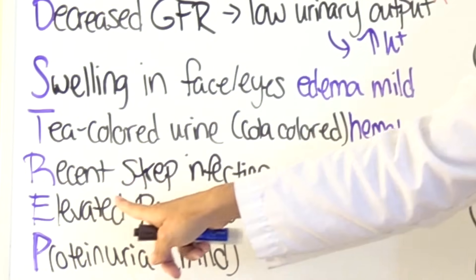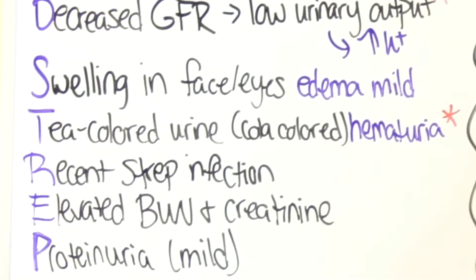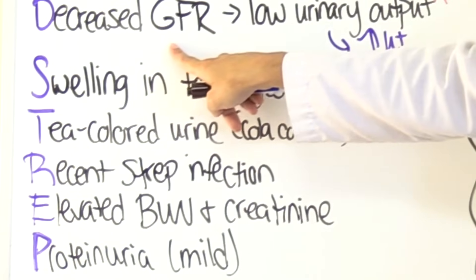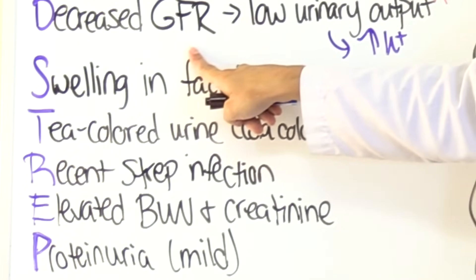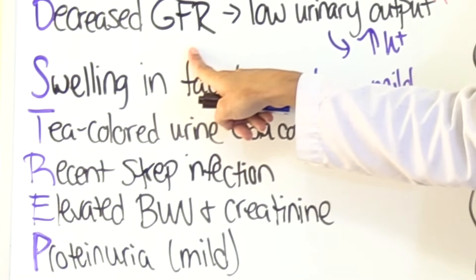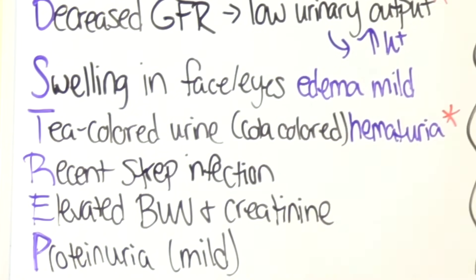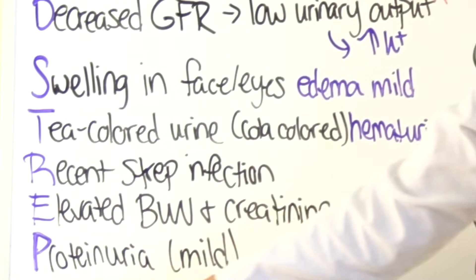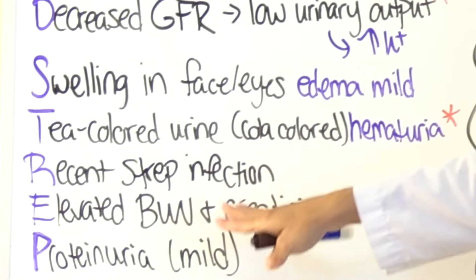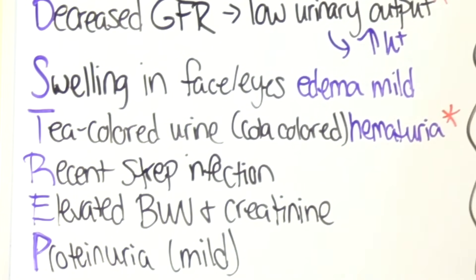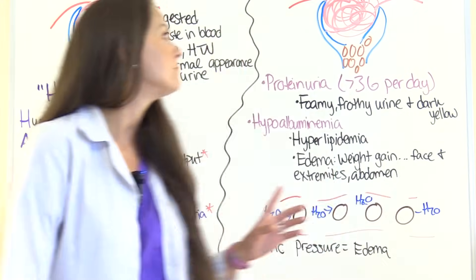R is for recent strep infection. E is for elevated BUN and creatinine — tied back to the decreased GFR because the kidneys aren't able to filter the blood normally, so waste products build up. And P is for proteinuria — keep in mind that the proteinuria is mild compared to nephrotic syndrome.